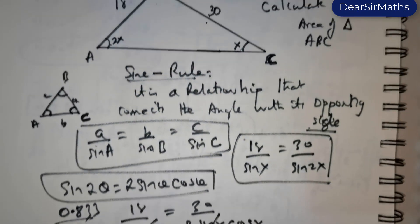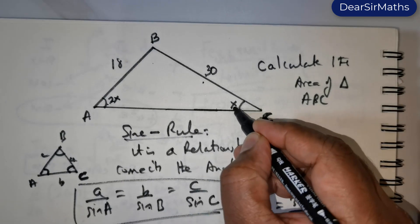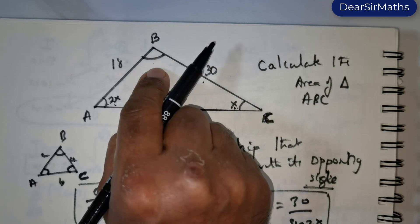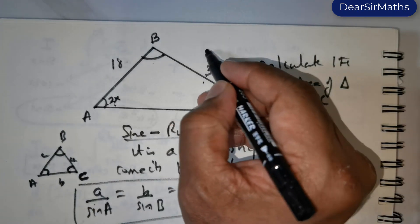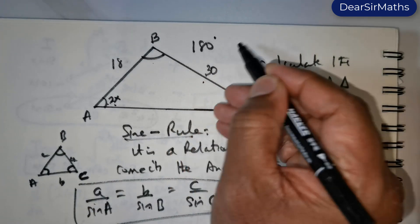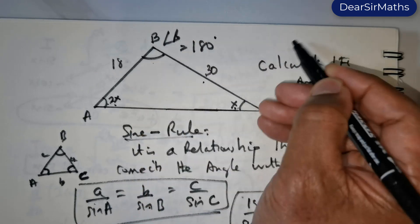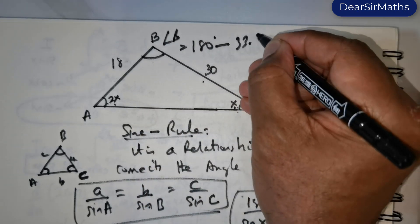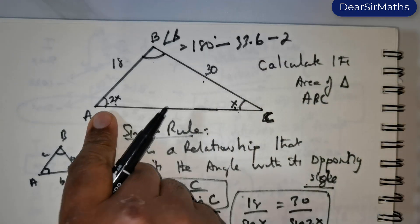Now go back to the question. The question has got x here and 2x here, and we need to know this angle. We need to know this angle. So we know that the sum of the angles is 180 degrees. So to get angle B, all I need to do is from 180 subtract 33.6 minus this is 2 times x, 2 times 33.6.